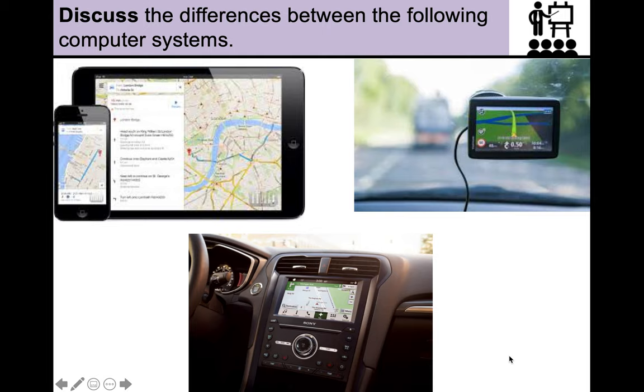And there's a little answer to the stretch. Two types of software are system software and application software. So all the apps that you can see there are essentially application software, they're programs. And system software are things like the operating system. So we've looked at what a computer system is, and now we want to kind of define three different types of computer systems.